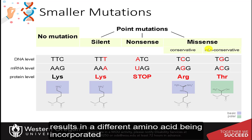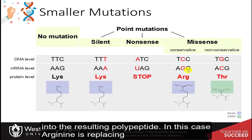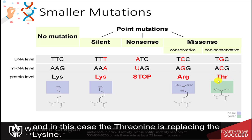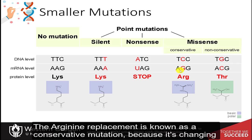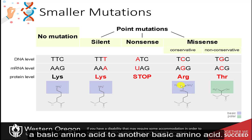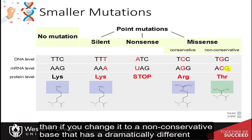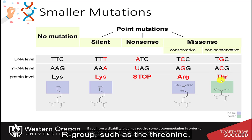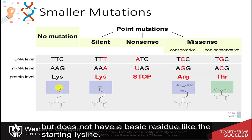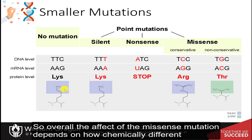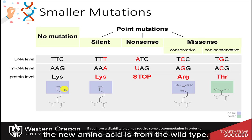A missense mutation results in a different amino acid being incorporated into the resulting polypeptide. In this case, arginine is replacing the wild-type lysine residue, and in another case, a threonine is replacing the lysine. The arginine replacement is known as a conservative mutation because it's changing a basic amino acid to another basic amino acid. This change is likely to have less effect on the protein function than changing to a non-conservative amino acid with a dramatically different R-group, such as threonine, which is much smaller and polar and does not have a basic residue like the starting lysine. Overall, the effect of the missense mutation depends on how chemically different the new amino acid is from the wild-type.